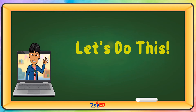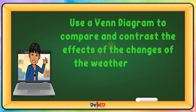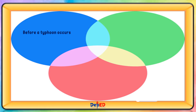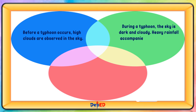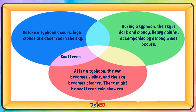Let's do this! Use a Venn diagram to compare and contrast the effects of the changes of the weather before, during, and after a typhoon in the community. Before a typhoon occurs, high clouds are observed in the sky. During a typhoon, the sky is dark and cloudy, and heavy rainfall accompanied by strong winds occurs. After a typhoon, the sun becomes visible and the sky becomes clearer. Common conditions include scattered rains, blowing winds, and flooded areas.